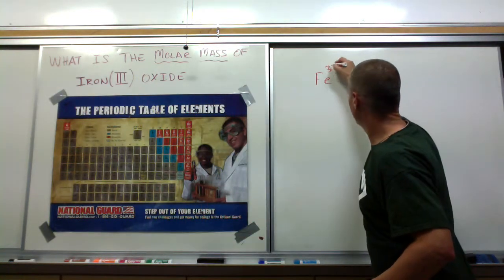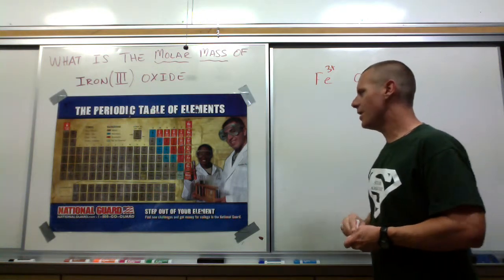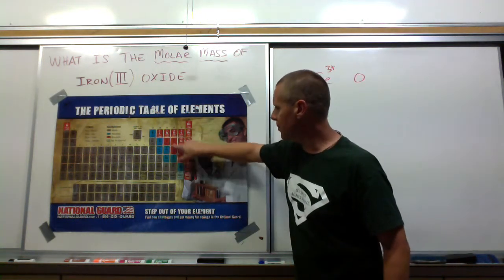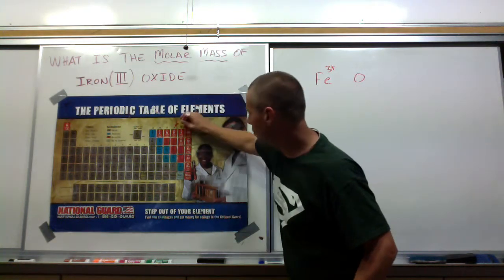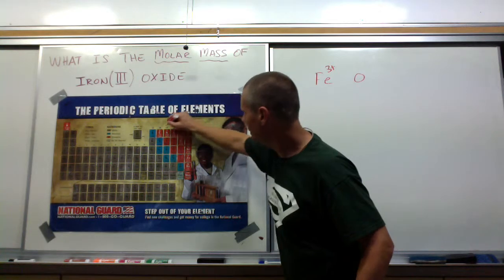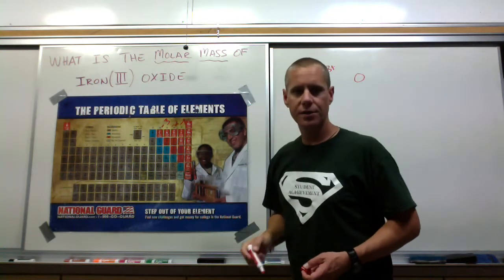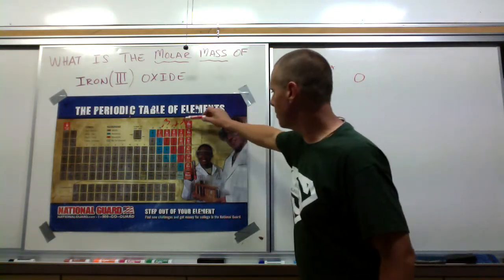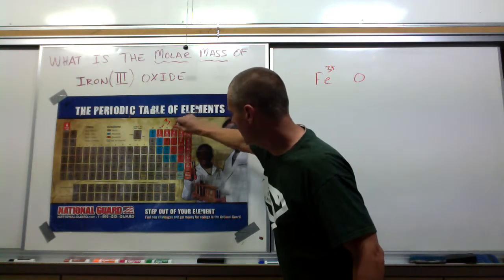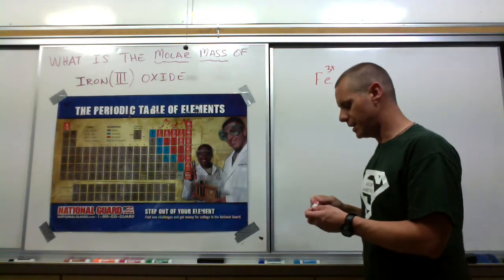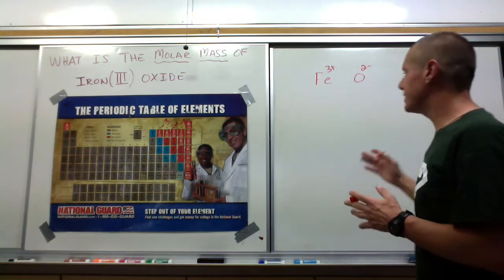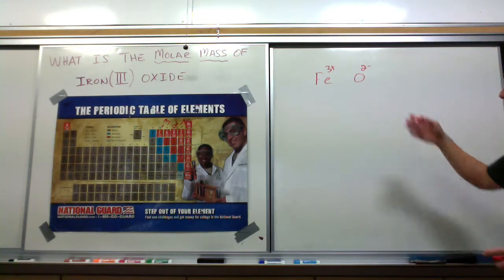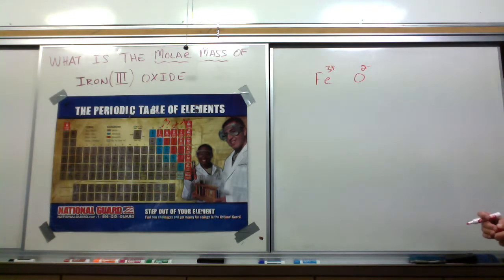So we have a 3 plus charge here. Now, oxide, you're going to have to remember that it's part of this group, and this group was a 2 minus. The halogens were 1 minus, these are 3 minus. So you've got to remember negative 1, negative 2, negative 3, and oxygen is right there with negative 2. So, 2 minus. Well, this iron 3 plus plus oxide 2 minus does not add up to be zero.